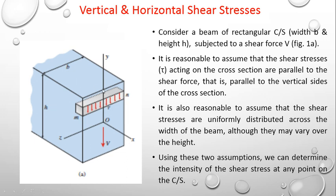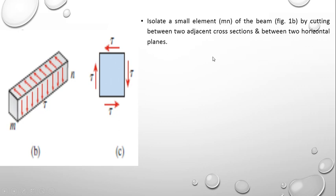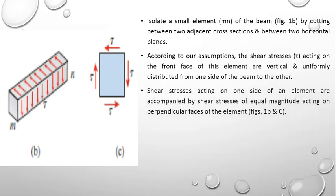This is the cross section of width B and height H. Now isolate a small element MN of the beam by cutting between two adjacent cross sections and between two horizontal planes. According to our assumptions, the shear stresses tau acting on the front face of this element are vertical and uniformly distributed from one side of the beam to the other. Shear stresses acting on one side of the element are accompanied by shear stresses of equal magnitude acting on perpendicular faces of the element.